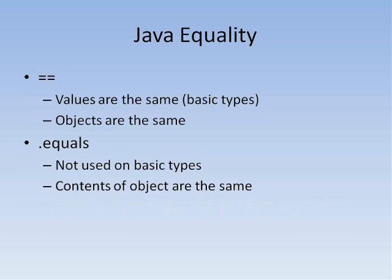For basic types, like int and double, this does what you would intuitively expect. It returns true if the two variables or expressions have the same value.